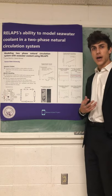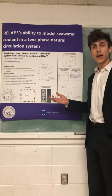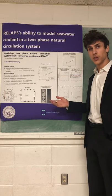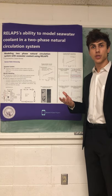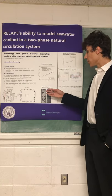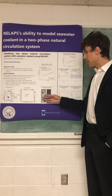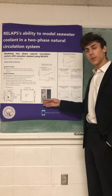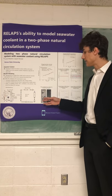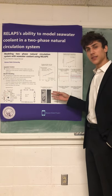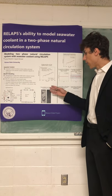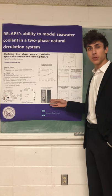Looking back at the experimental setup, they used a glass tube to encapsulate the hot channel, which allowed us to look in at the flow regimes across the different coolants. For the deionized water we noticed a predominantly slug flow inside of the hot channel, whereas for the seawater we noticed a predominantly well-mixed bubbly flow.